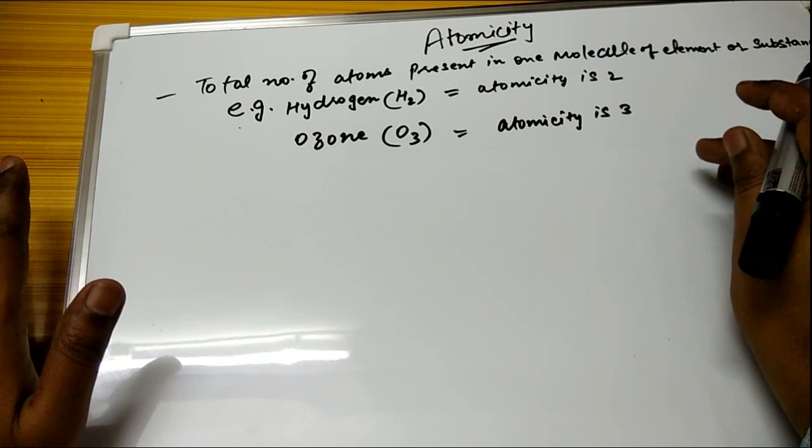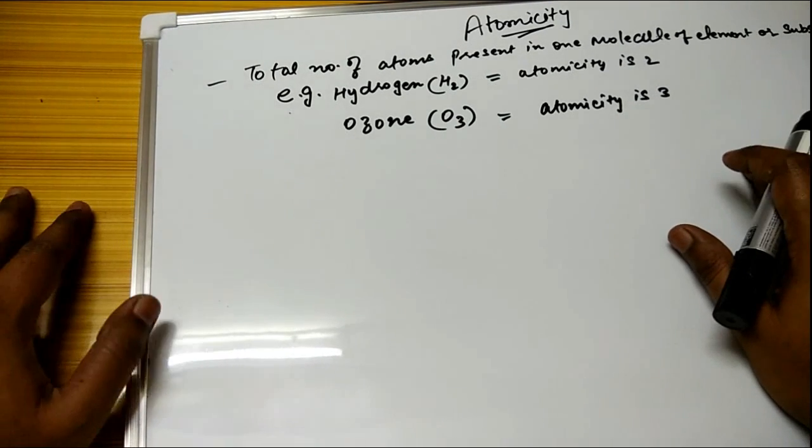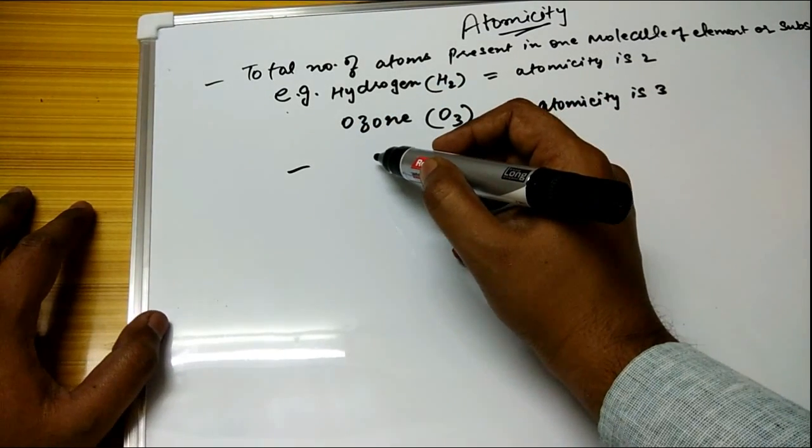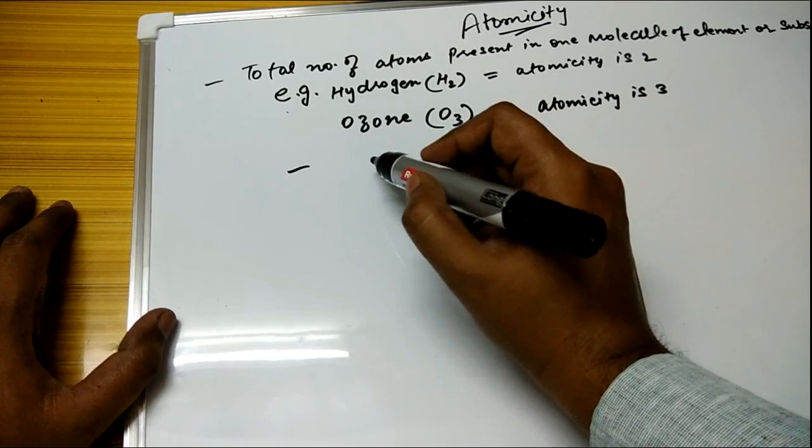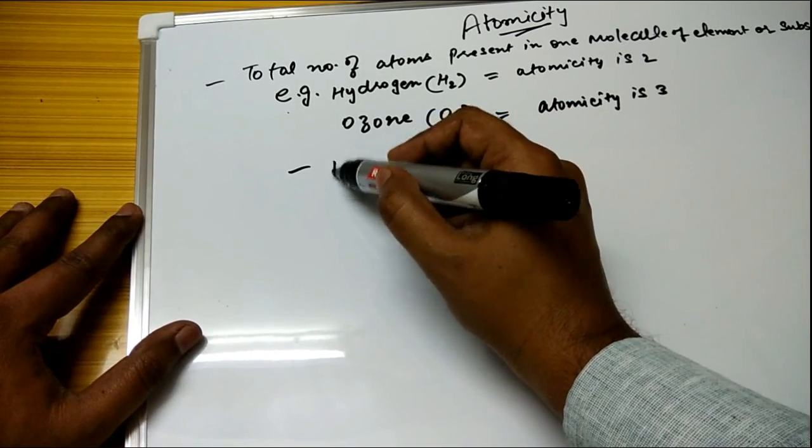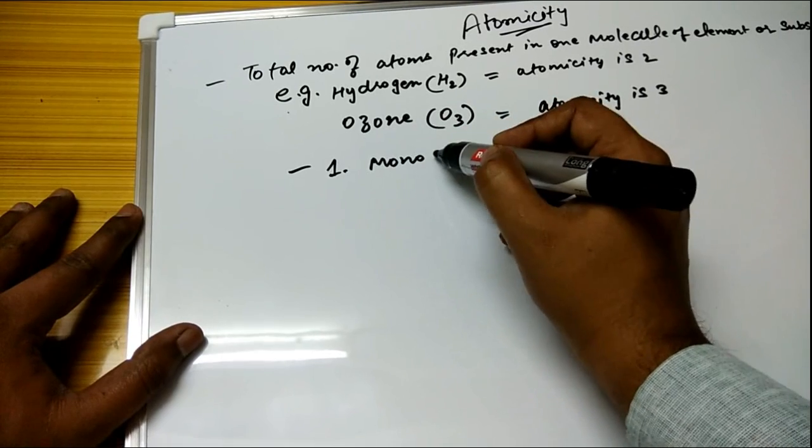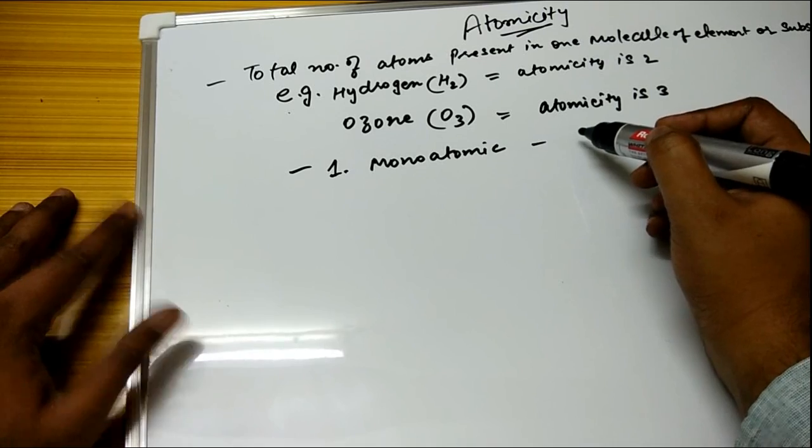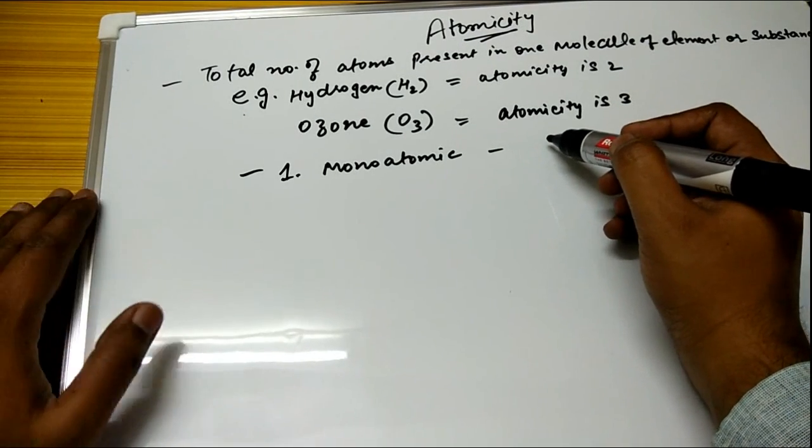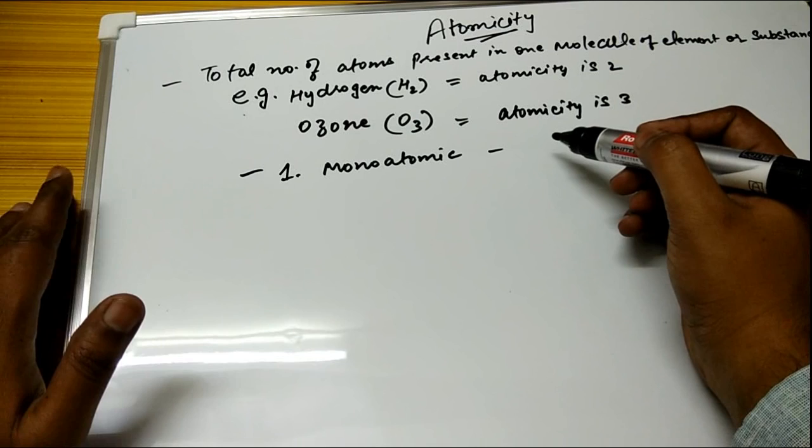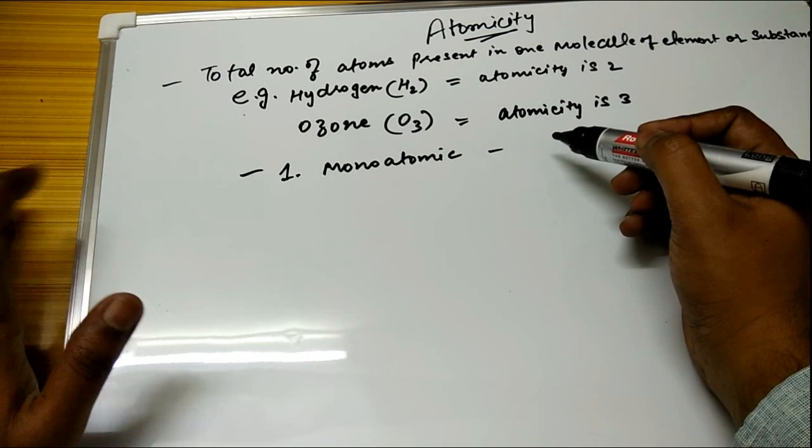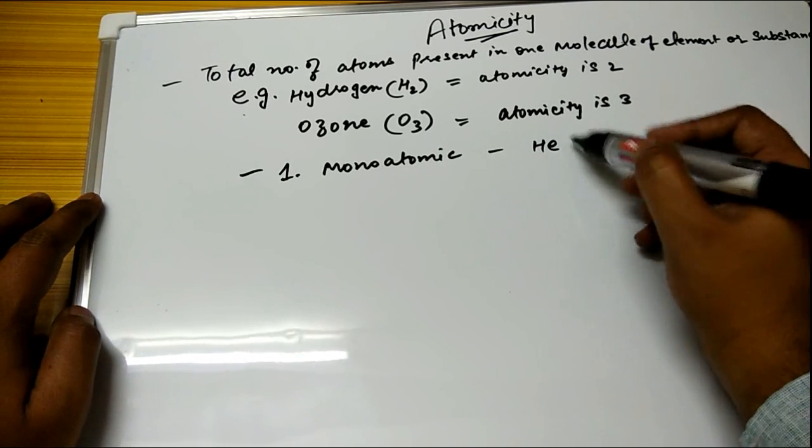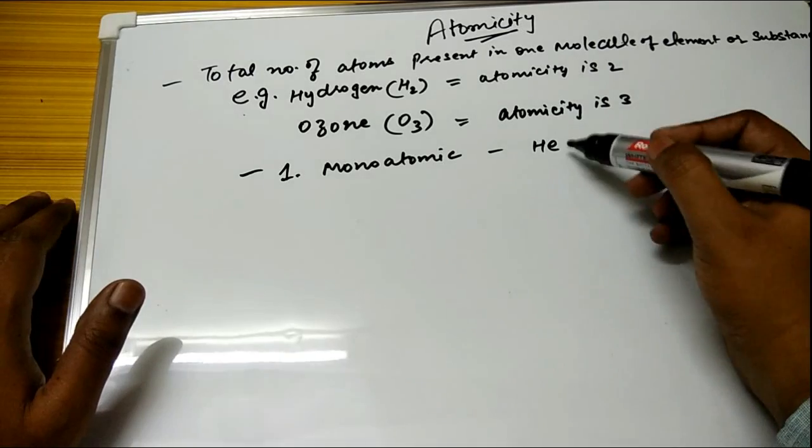Now this is a very easy concept. Further, you can say there are various types of atomicity. Number one is monoatomic. By giving an example, I can say that monoatomic are those atoms in which a single atom is present. For example, helium is monoatomic because you can see the number is one, that is helium is single.